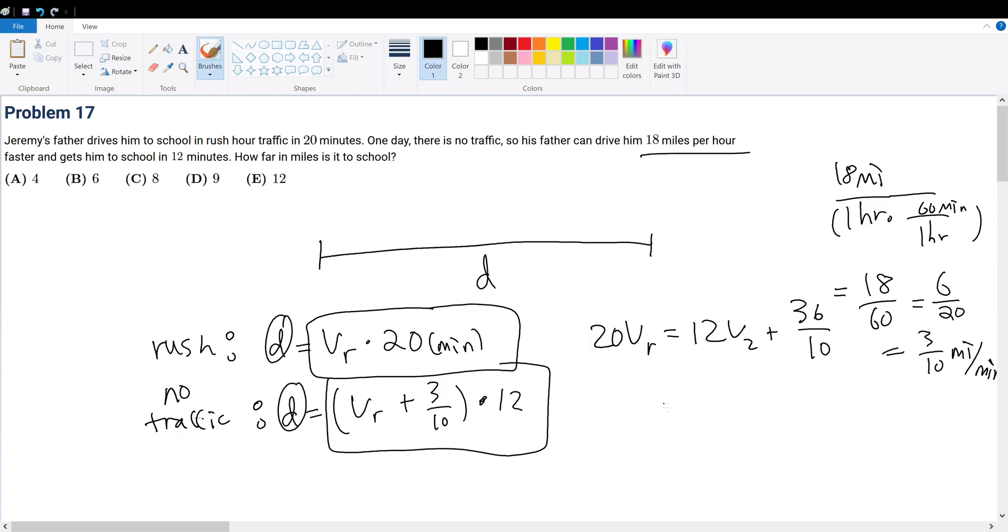So that means if you isolate Vr, that's 8Vr is equal to 36 over 10 times 1 over 8.